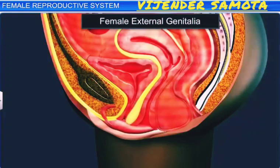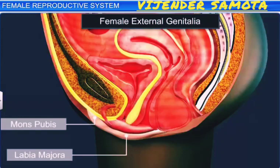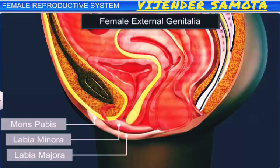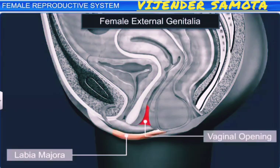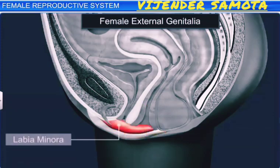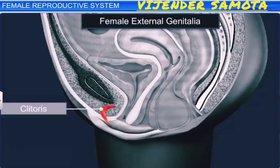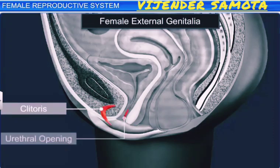The female external genitalia includes the mons pubis, labia majora, labia minora, and the clitoris. The labia majora consists of fleshy folds of tissue that extends down from the mons pubis and surrounds the vaginal opening. Hidden under the labia majora is the labia minora. Towards its upper end lies the clitoris, a small finger-like structure, and below it is the urethral opening.